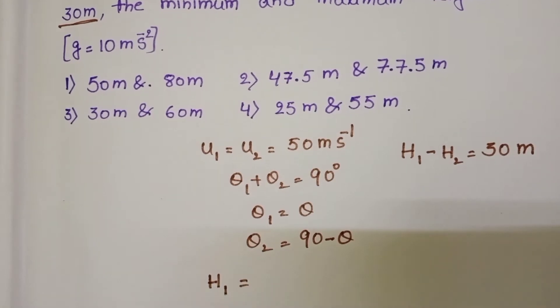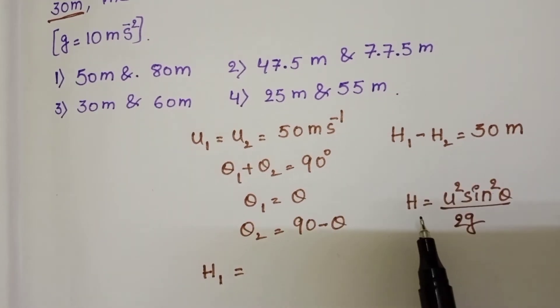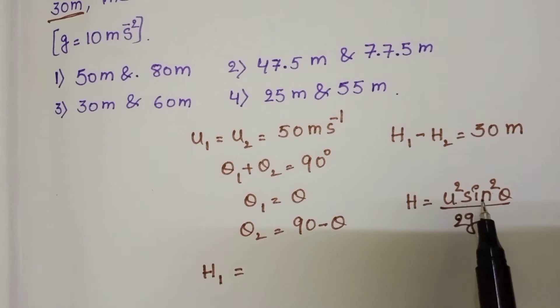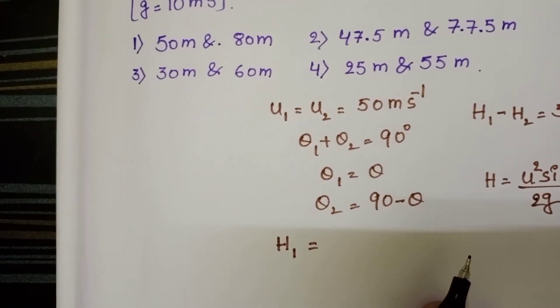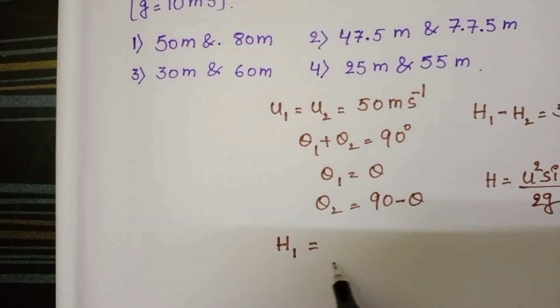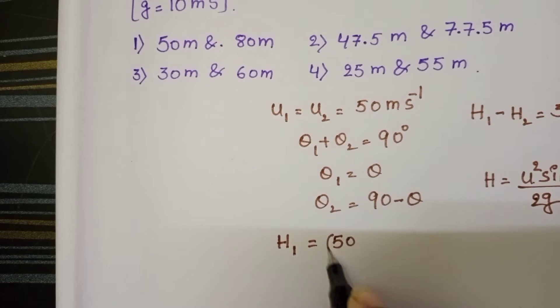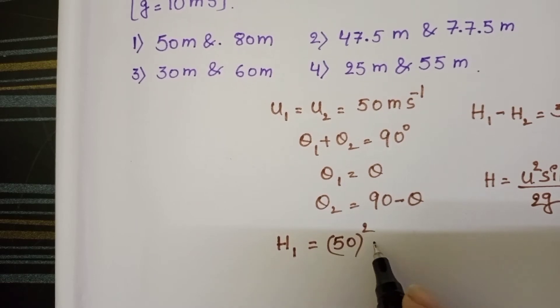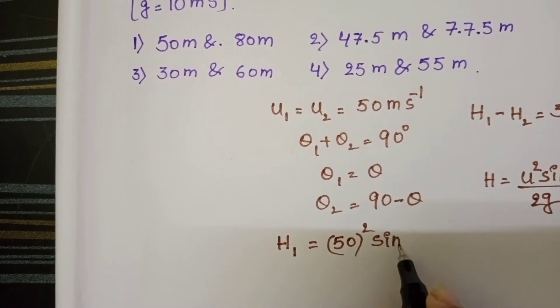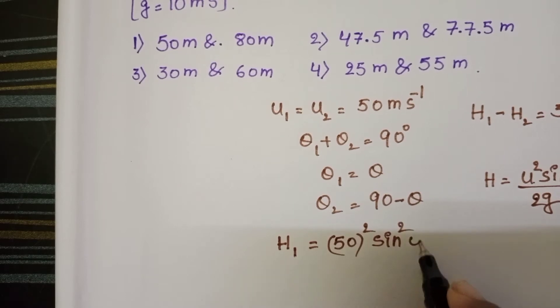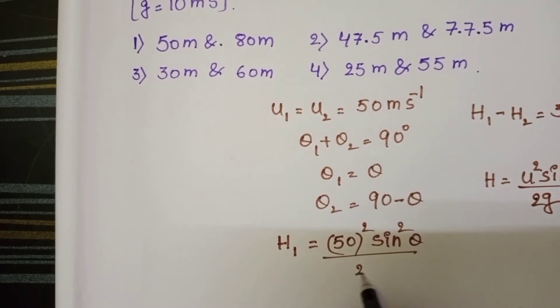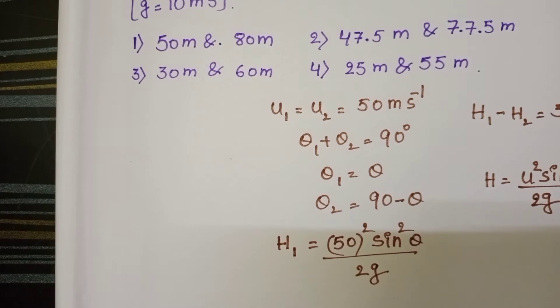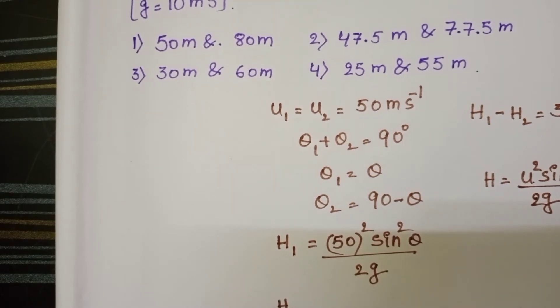By using the given condition, maximum height formula is H equals u squared sine squared theta by 2g. H1 equals initial velocity 50 squared sine squared theta by 2g.